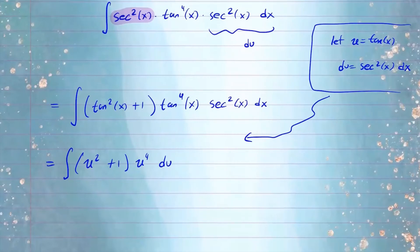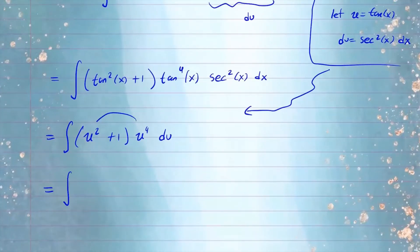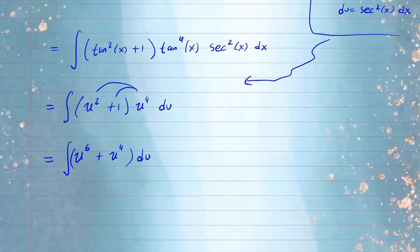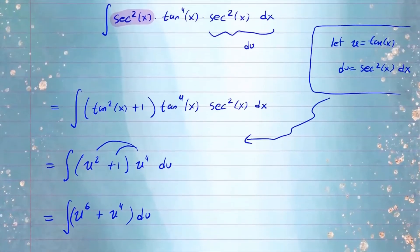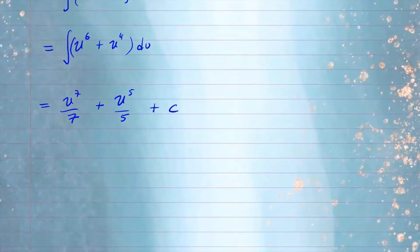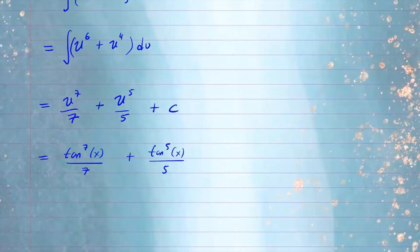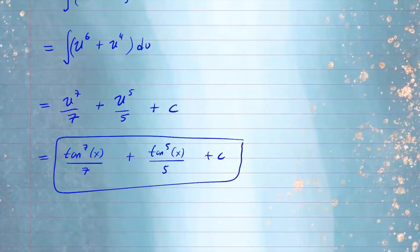Now it looks like a polynomial. Let's distribute and integrate. Distributing gives the integral of u to the sixth plus u to the fourth du. Applying the power rule: u to the seventh over seven plus u to the fifth over five plus C. Now replace u with tangent. Our final answer is tangent to the seventh of x over seven plus tangent to the fifth of x over five plus C.